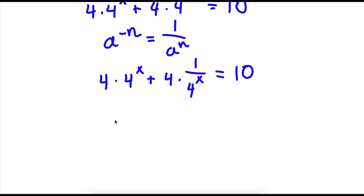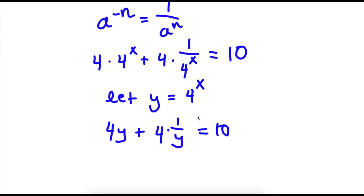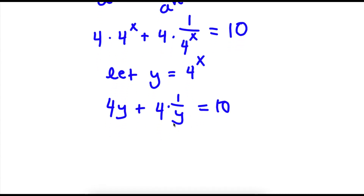Now, I'm going to let y equal 4 to the power of x. So if I substitute 4 to the power of x for y, I get 4 times y — so 4y — plus 4 times 1 over y, equal to 10. And 4 times 1 over y is the same thing as 4 over y, equal to 10.